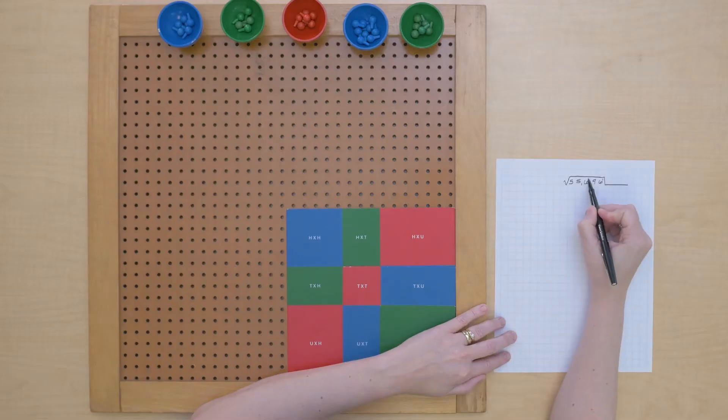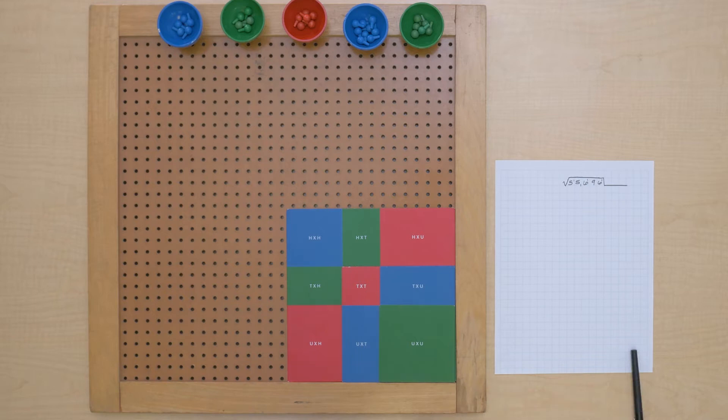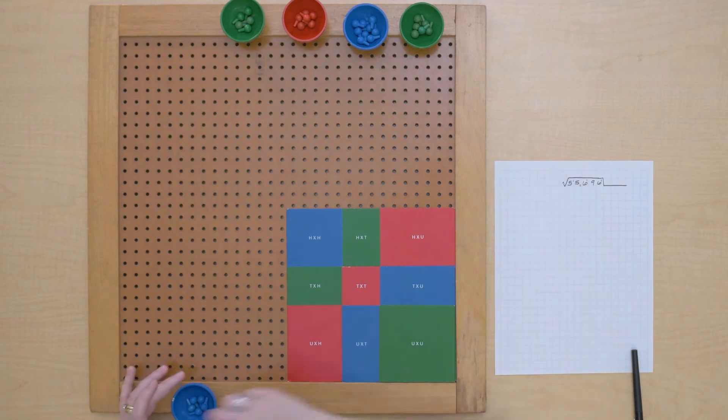So let's find the square root of 55,696 and we know that's going to be a three-digit root. I've got my trinomial guide square here and we're going to start by looking at these five ten thousands.